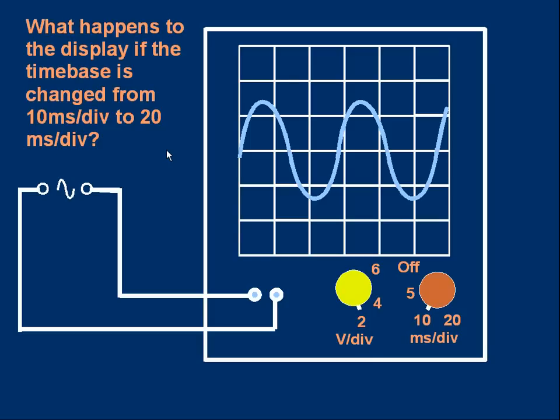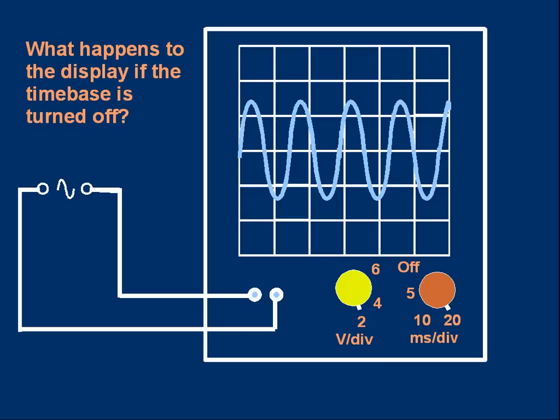What do you think would happen if the time base would change from 10 milliseconds per division to 20 milliseconds per division? Pause the video. Have a think. The answer is this. The pattern would get compressed. If you think about it, it makes sense, because each horizontal division represents a longer time.